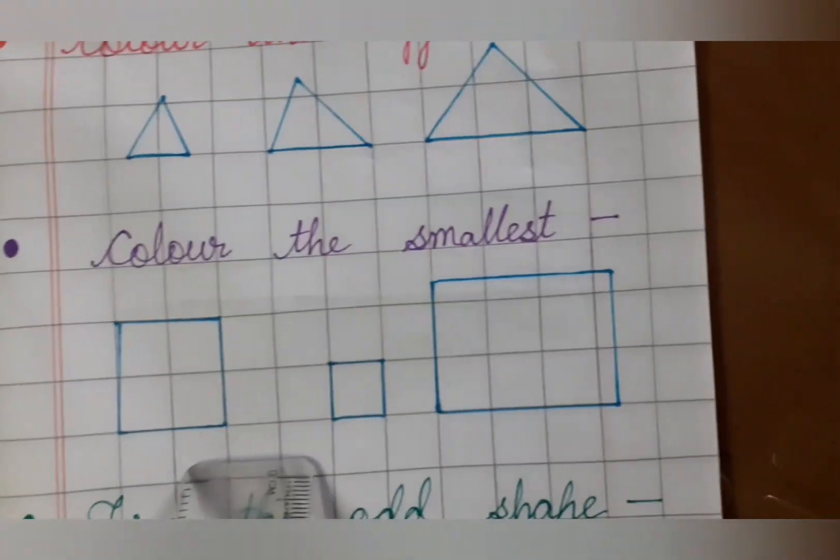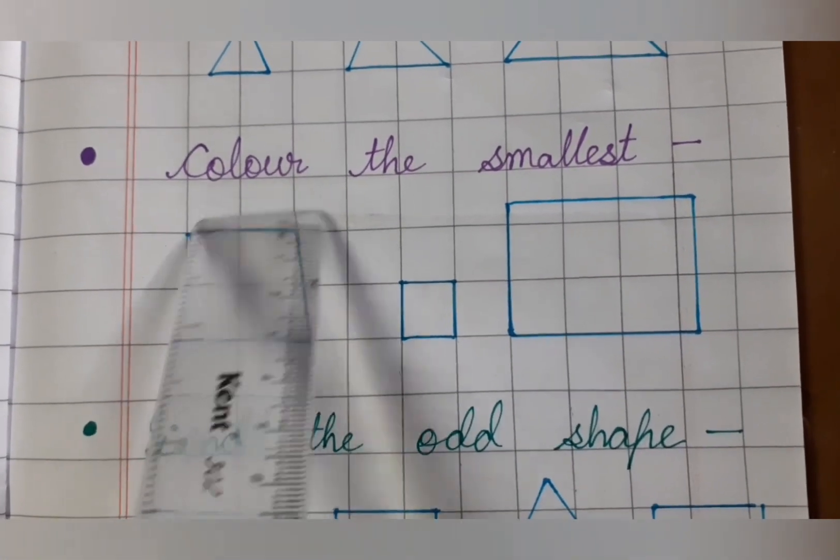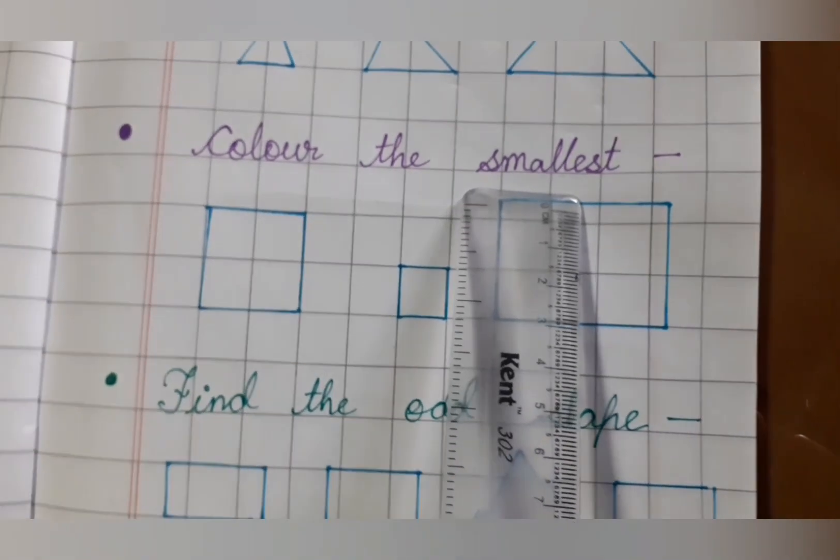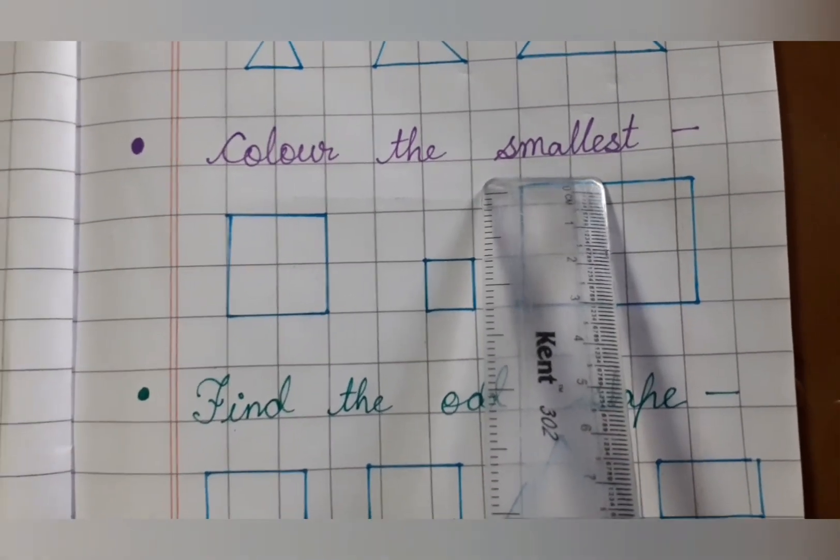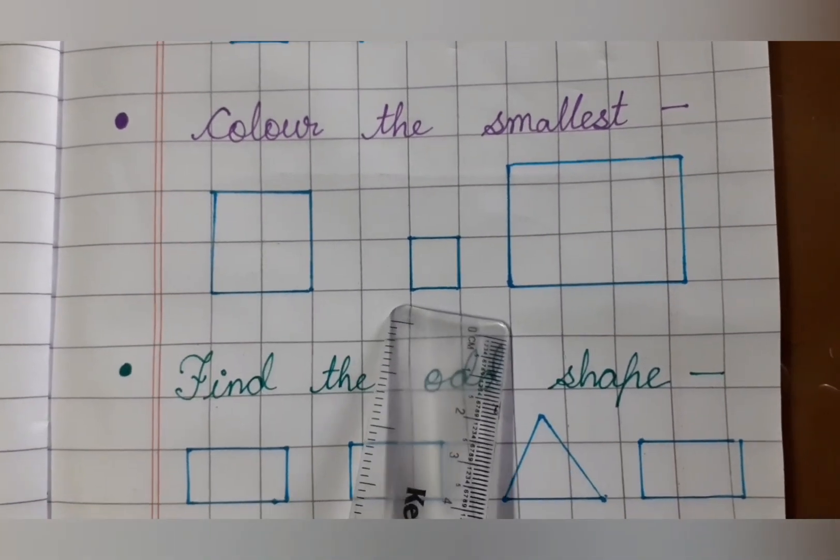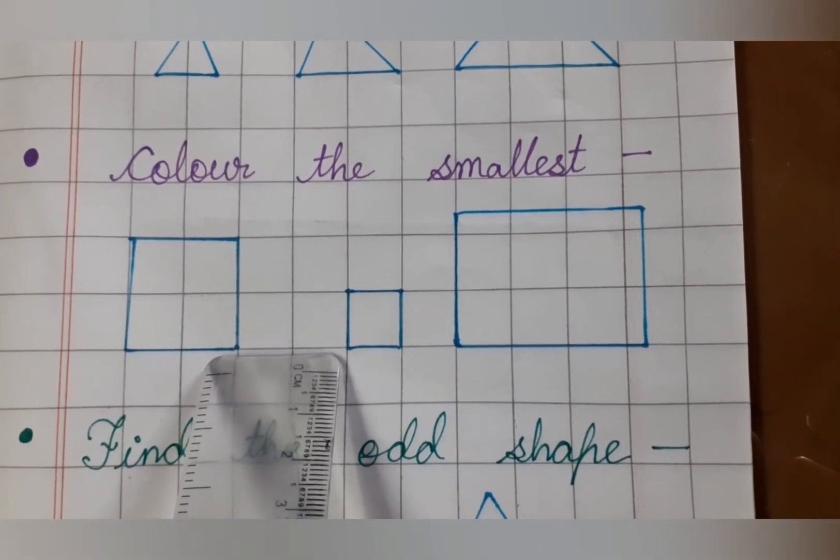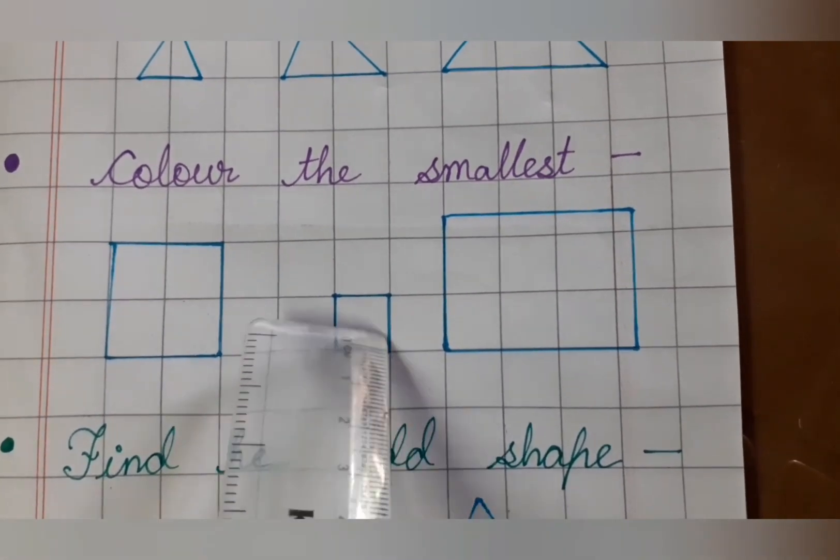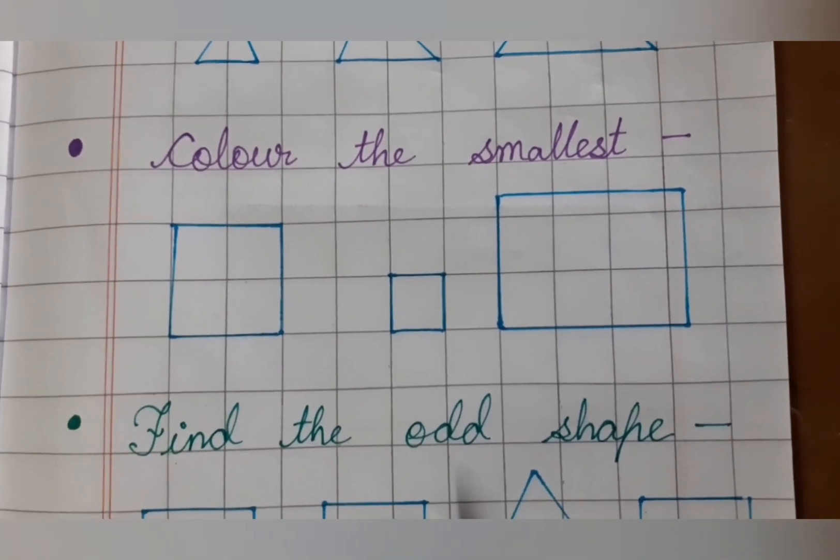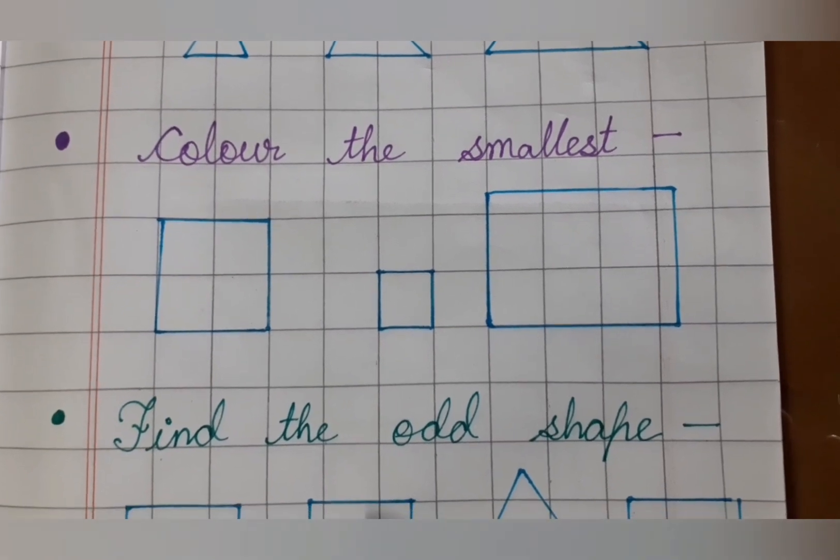Next one. C-O-L-O-U-R, color, T-H-E, the. S-M-A-L-L-E-S-T, smallest. Color the smallest. You can see we have some shapes. Which is this? This is square. And so, you have to find out which shape is the smallest here, okay? You will find out the smallest shape.